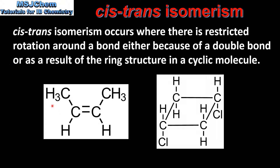On the left we have a molecule that has a carbon-to-carbon double bond, and around this double bond there is restricted rotation. On the right we have a cyclic molecule which also has restricted rotation because of the ring structure.